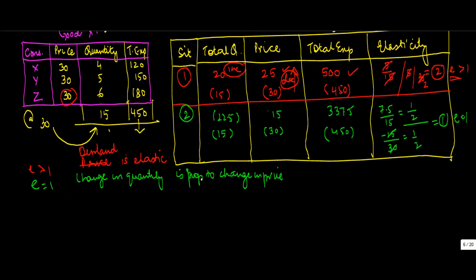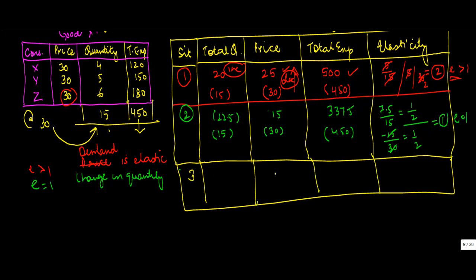The third case: the third situation can be when, let's say, the price falls from 30 to 24. So there is a decrease of 20 percent, right? And let's say the quantity demanded increased from 15 to 16.5. You can compute the total expenditure.